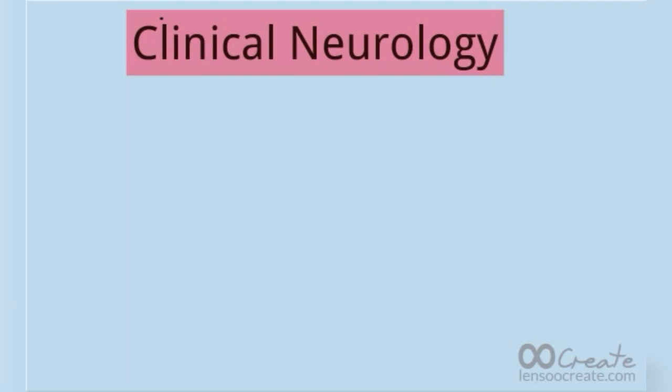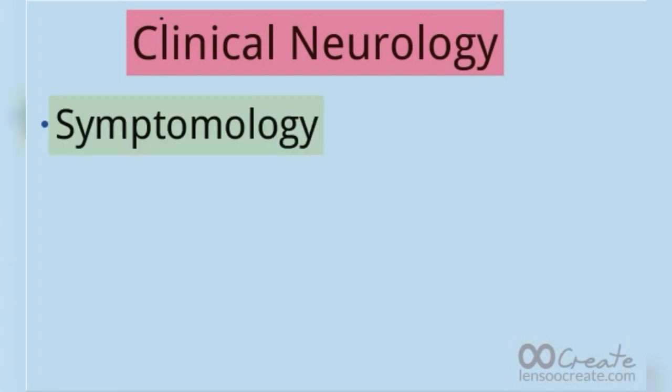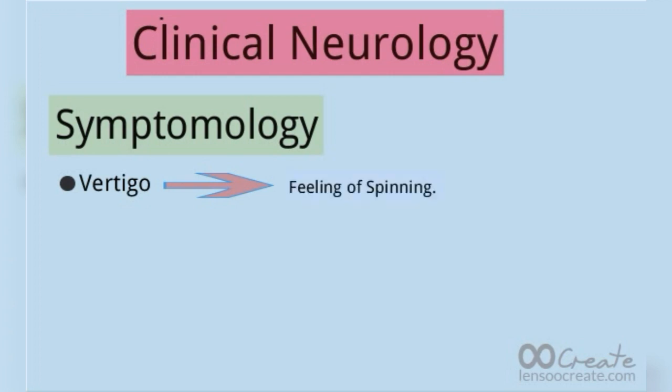Hello guys, today we are going to discuss clinical neurology, starting from symptomology. The first symptom is vertigo, which is defined as a feeling of spinning — something spinning around.